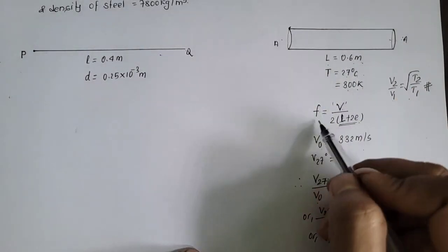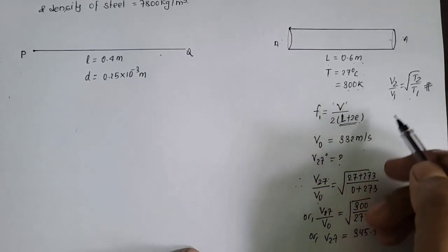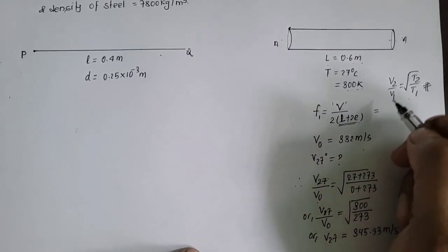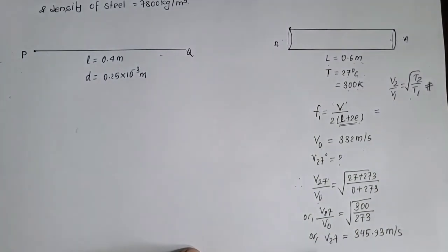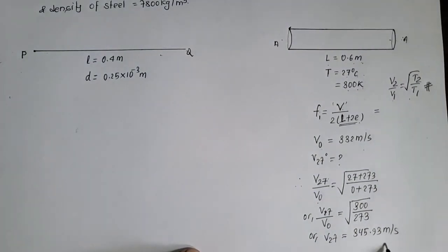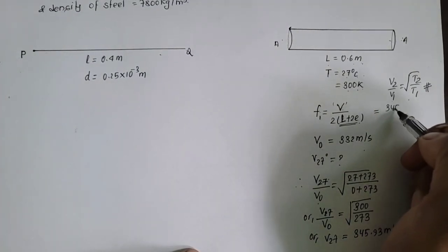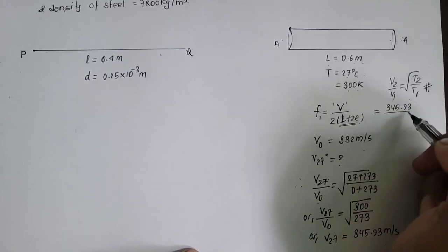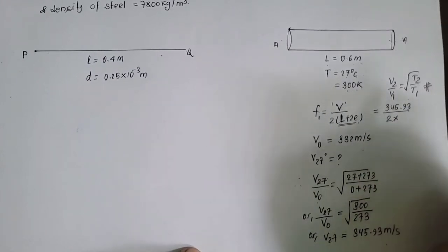Fundamental mode ao vibration ma open organ pipe vibrate garunda kheri directly formula use garunda paro F1 equal to velocity of the sound at that temperature that means 27 degree celsius coo lagy use garunda paro 345.93 divide by 2 times effective length of the given open organ pipe which is 0.6 meter.